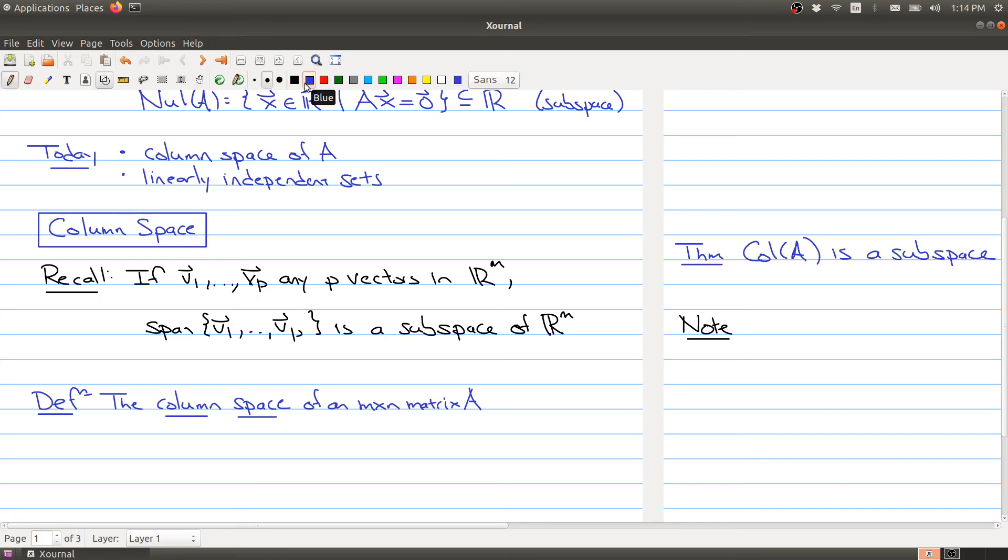So what is the column space of an M by N matrix? The column space of an M by N matrix A denoted col A, short form for column, is the span of A1 through AN, where these are the columns of your matrix A. So basically, you're just taking the columns of your matrix A, thinking of them as vectors in R M, because it's an M by N matrix, and then you're taking the span of those vectors.